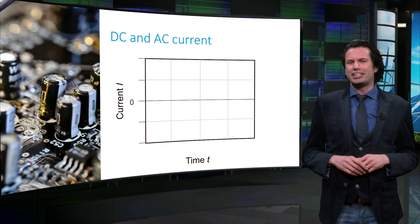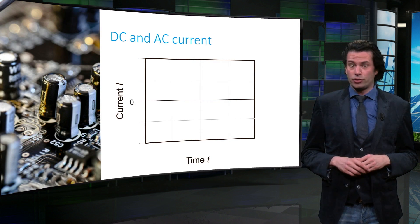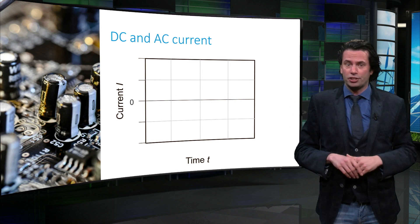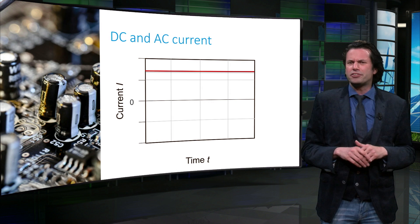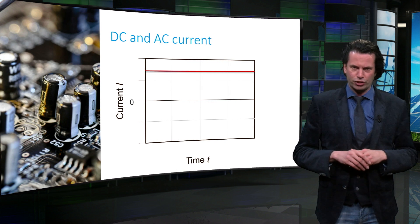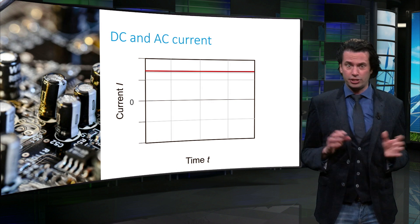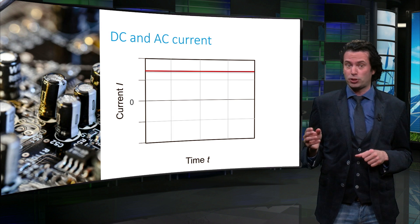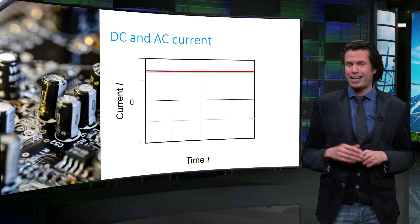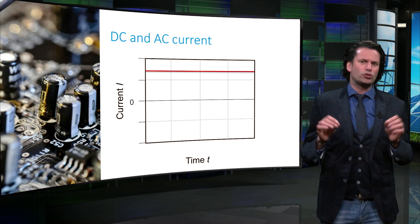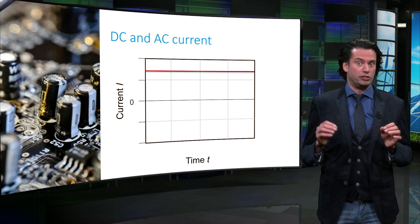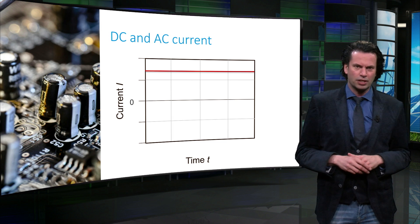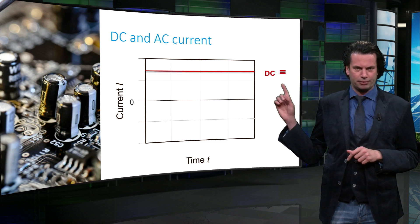The output of a PV module is direct current, or DC. DC, or direct current, is the unidirectional flow of electric charge. DC is produced by power sources like batteries, laptop chargers, and solar cells. It is common to talk of quantities like DC voltage, DC power, and DC current. The symbol of DC power is shown here.